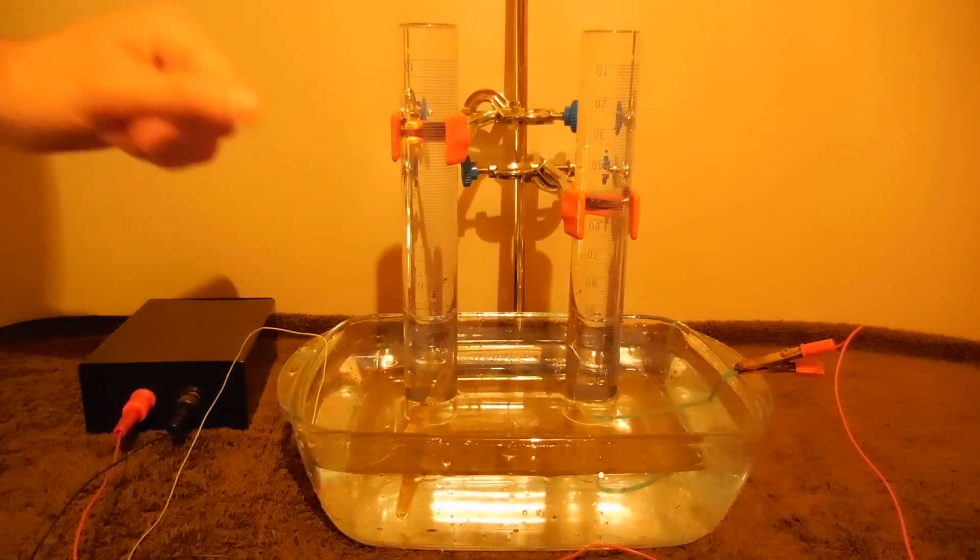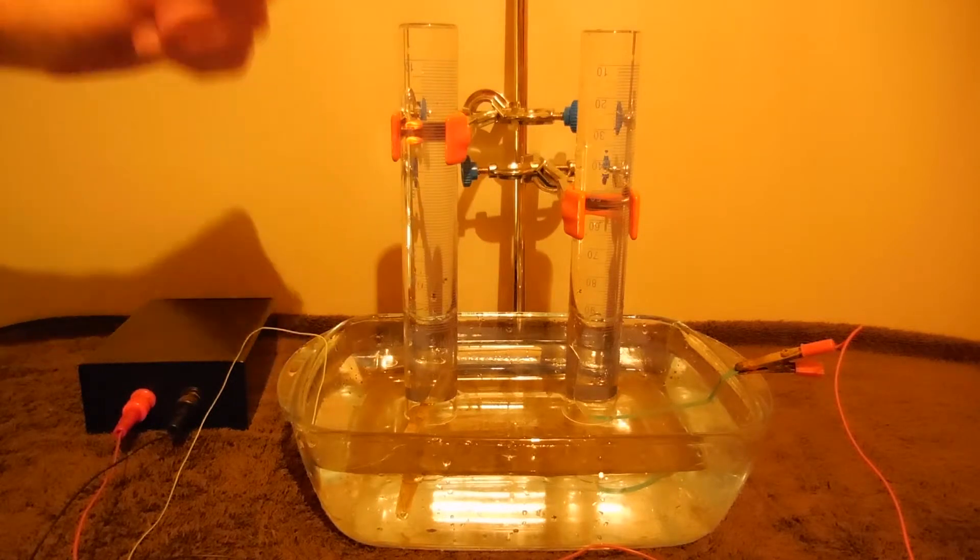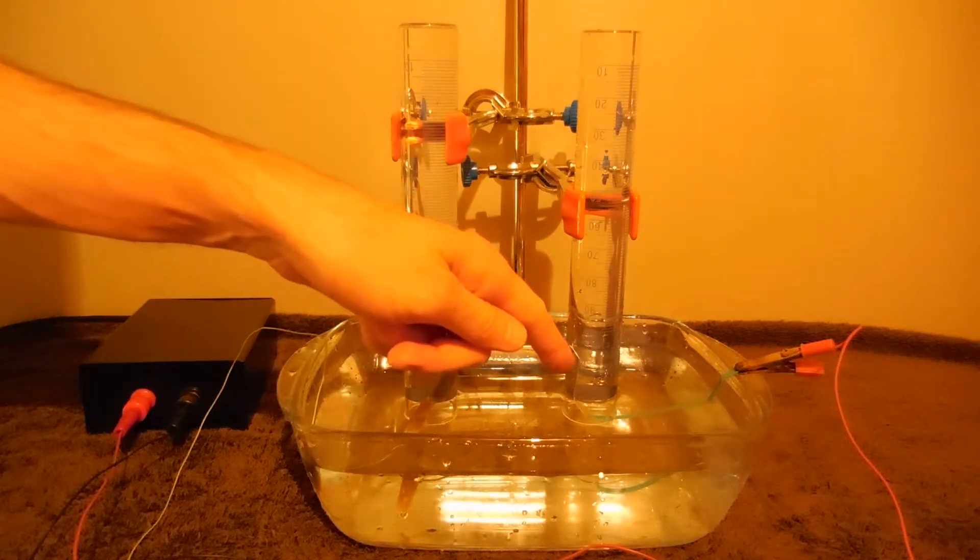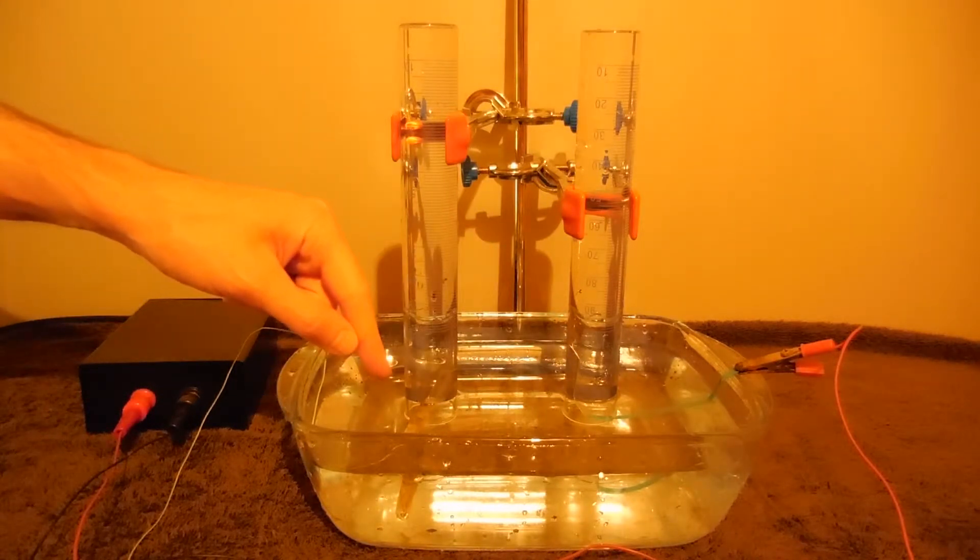Hello. In this experiment I will show you electrolysis of water with positive electrode made of aluminum and negative electrode made of graphite.